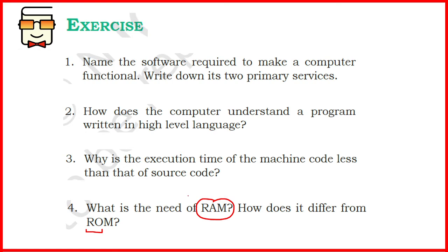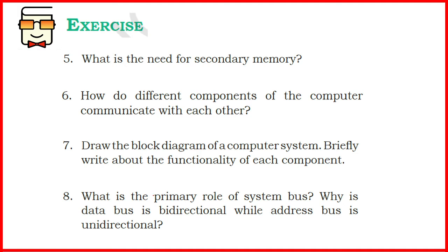Apart from this, RAM is volatile in nature, meaning that as long as there is power supply in the computer system, the contents or data stored in the RAM will be retained. But ROM is non-volatile, meaning the contents once written into the ROM will remain there and will not get wiped out when the power supply is removed. This is the basic difference between RAM and ROM.